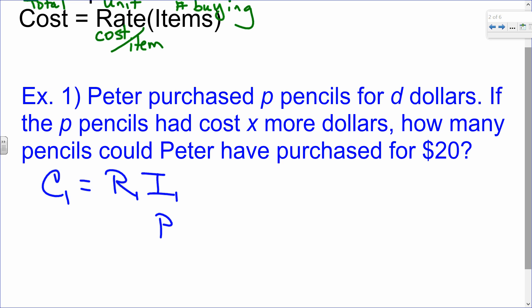Then it says D dollars. Does it say dollars per pencil? So it's not a rate. So Sophie, where does D need to go? It needs to go in the total cost. Sorry about that. Sounds like you both knew the correct answer. So that means our rate for one pencil is D divided by P. D over P dollars per pencil.